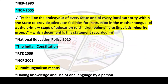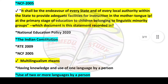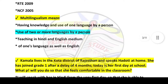Next question: 'It shall be the endeavor of every state and every local authority to provide adequate facilities for instruction in the mother tongue at the primary stage of education to children belonging to linguistic minority groups' — which document is this recorded in? Answer is option number two: the Indian Constitution.